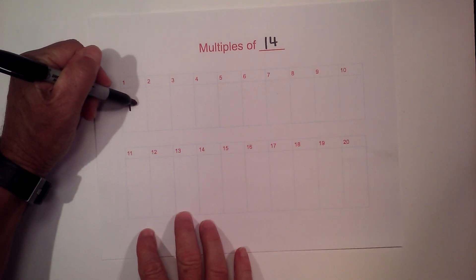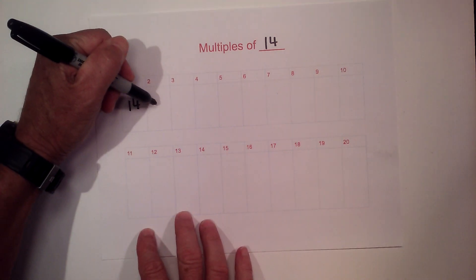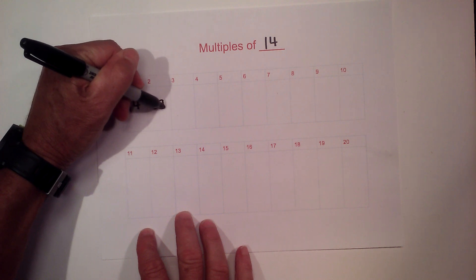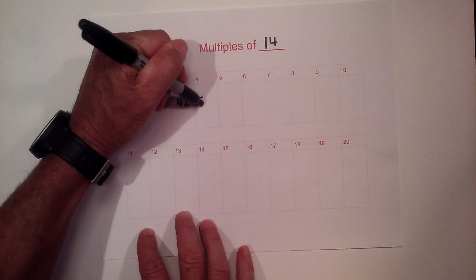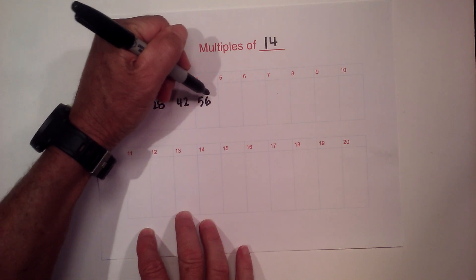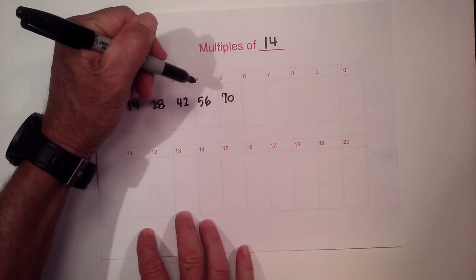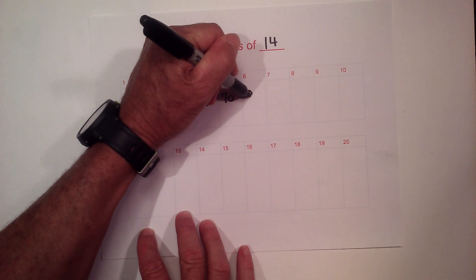Multiples: 14 times 1 is 14, and we have 28, times 3 is 42, times 4 is 56, times 5 is 70, times 6 is 84.